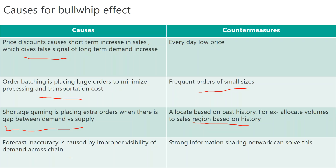The bullwhip effect can cause havoc in business — it can create product shortages when there is a temporary slowdown, or create huge excess inventory in the supply chain when demand temporarily spikes. The one solution is to share demand efficiently and transparently across the supply chain. That's all about the bullwhip effect — I hope you liked the session, thank you for watching.